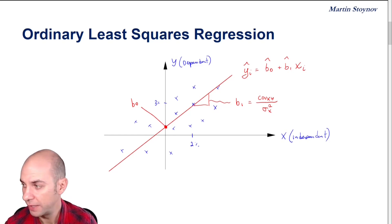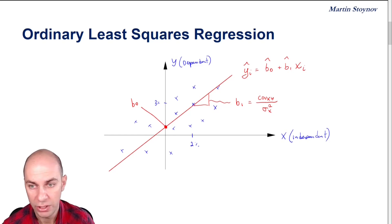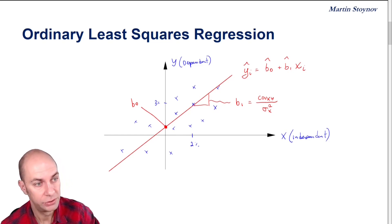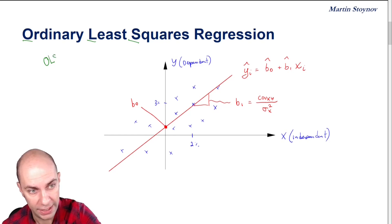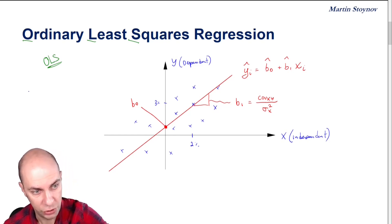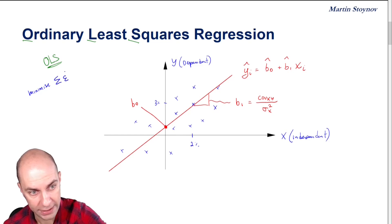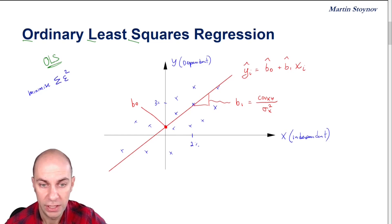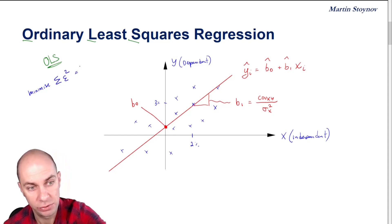One interesting question you might ask is: how do we know what intercept and slope values to use? How do we know where to draw the regression line? This brings us back to ordinary least squares regression — OLS regression. What we're trying to do in this type of regression is minimize the sum of squared errors. We're using the Greek letter epsilon, which stands for the error term or residual term in the regression. So we're trying to minimize the sum of squared errors, or sum of squared residuals.